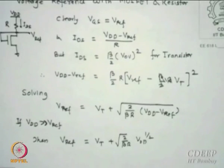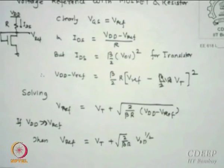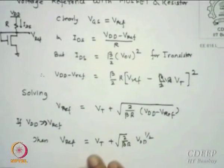The formula V_reference = Vt + sqrt(2/(beta*R)) * Vdd^(1/2) is the reference expression. To adjust V_reference, you can adjust W/L and R. Please remember Vdd is not in your hands - the technology dictates 1.2 volt, 1.5 volt, 2.1 volt. So we look at beta (size) and R.